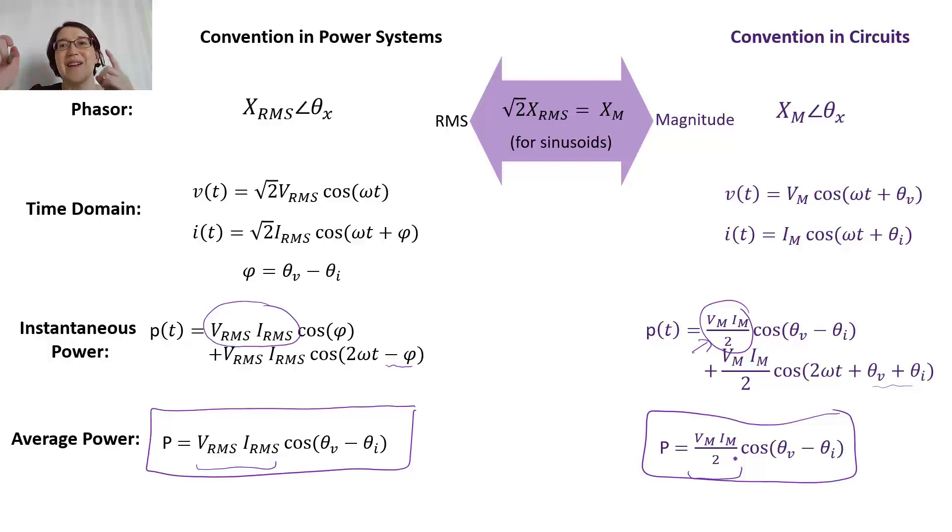So if you're in circuits and you're using the convention where you're given the magnitude, you take the voltage magnitude, current magnitude, divided by two, and then multiply it by the cosine of the phase difference between the voltage and the current. So that's it.